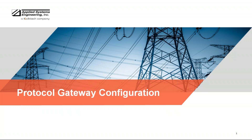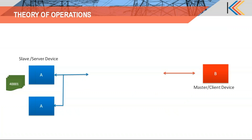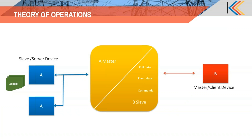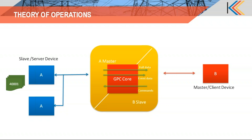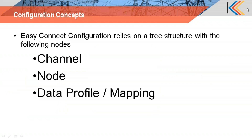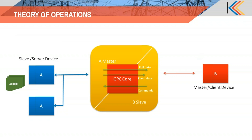I'll first show you how the protocol gateway operates. On your screen there is a slave device and a master device — both are on different protocols. Let's say the slave device is on Modbus and the master device is on DNP. What we need to do is have a gateway in between so that the slave device can actually talk to the master device.